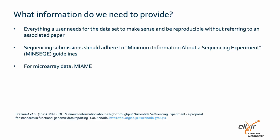What data do we need to provide when submitting RNA-seq reads? The short answer is everything a user needs for the dataset to make sense and be reproducible without referring to an associated paper. To outline a more formal set of rules, the minimal information about the High-Throughput Nucleotide Sequencing Experiment guidelines were introduced in 2008 as a logical extension of the guidelines to next-generation sequencing technologies used for transcriptome analysis.